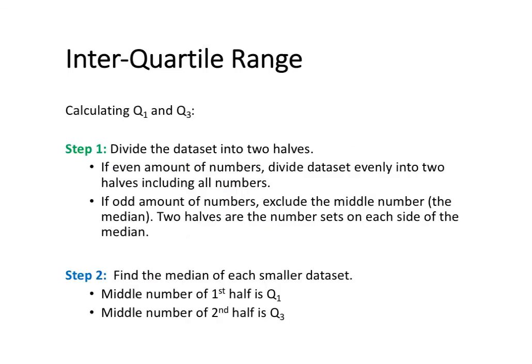To calculate quartile 1 and quartile 3, the first step is to divide the data set into two halves. If the total data set has an even amount of numbers, then you divide the data set evenly into two halves and all numbers are included. Alternatively, if there's an odd amount of numbers, then you exclude the middle number when you split it in half, so the two halves will still have equal amounts of numbers in them.